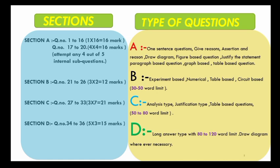Section C consists of analysis-type questions — you have to analyze the question, and there may be justification-type and tabular-type questions as well. The word limit has increased to 50 to 80 words because they are three-mark questions.